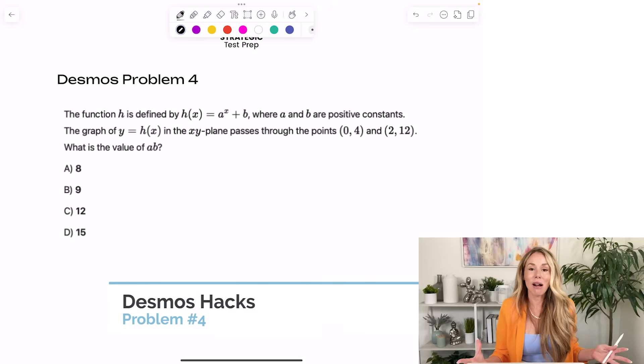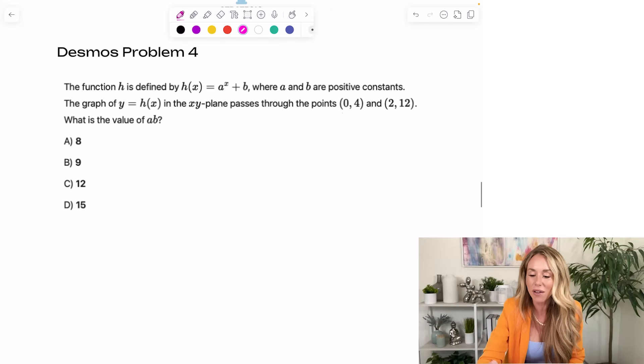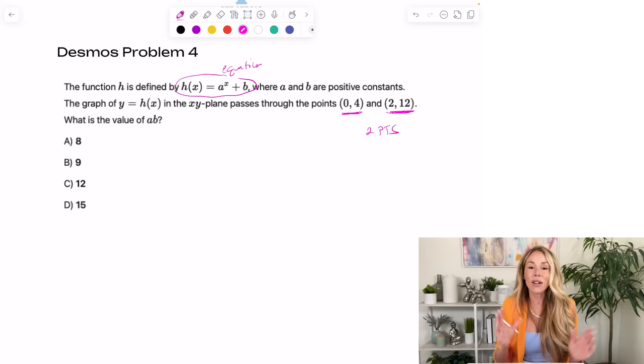Alright, my next problem I wanted you to see, because I want you to understand that you can run a regression, even if they don't give you a table. I think lots of students look just for them to give you a table to run the regression. And that is not the case. So what I want you guys to understand is if you have at least two points, and they give you the equation of the function, you can run a regression.